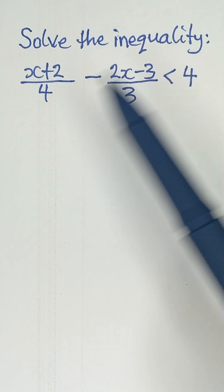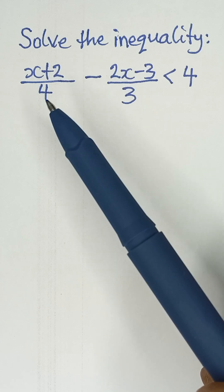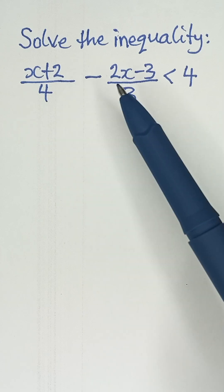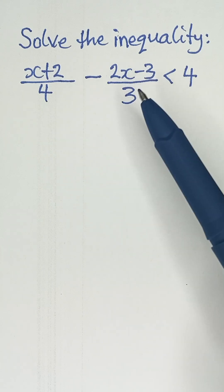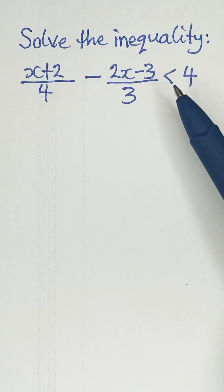Solve the inequality (2x+2)/4 - (2x-3)/3 < 4.